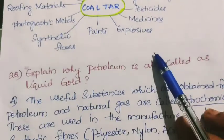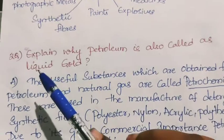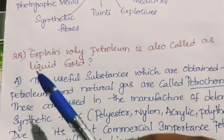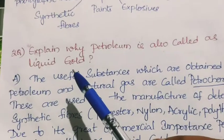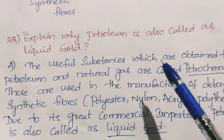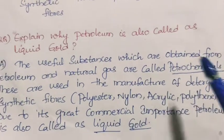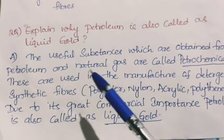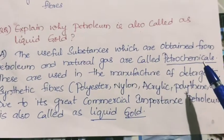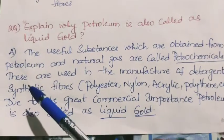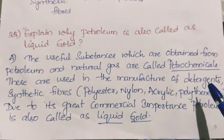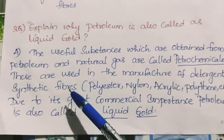Look at the next question: explain why petroleum is also called liquid gold. The useful substances obtained from petroleum and natural gas are called petrochemicals. These are used in the manufacture of detergents and synthetic fibers.